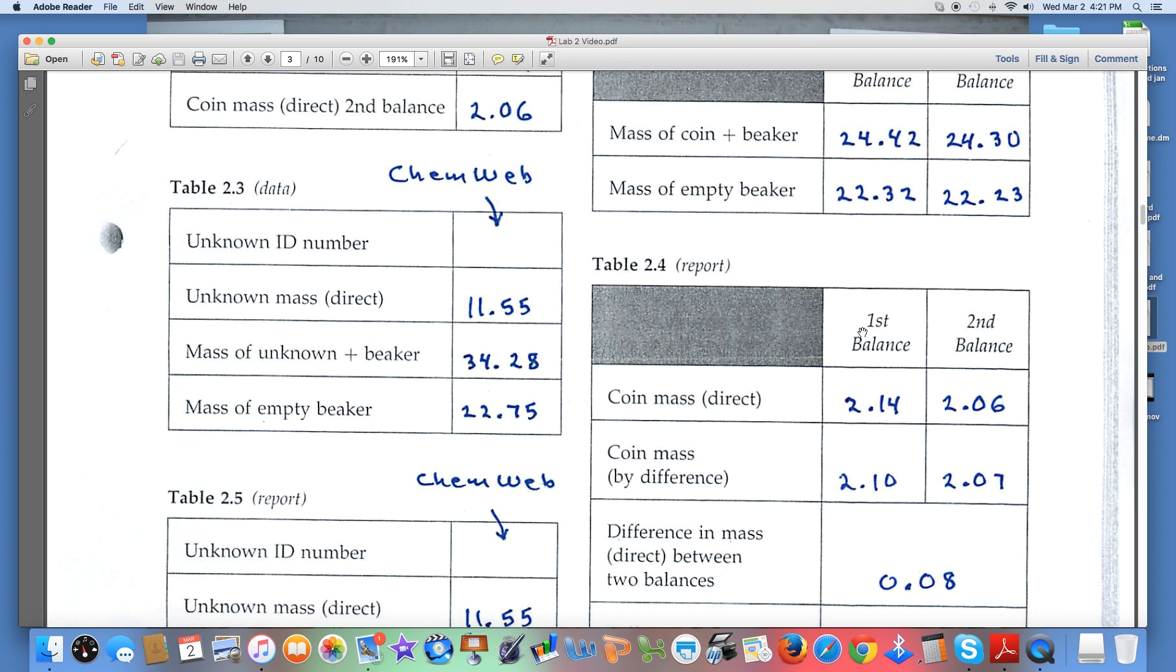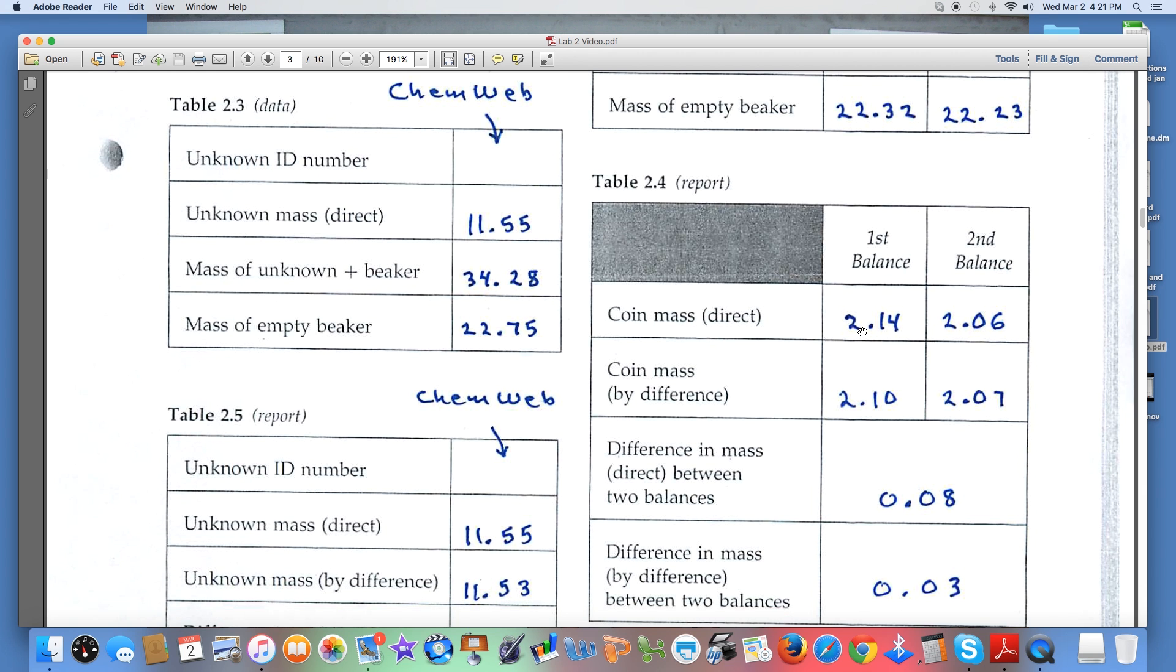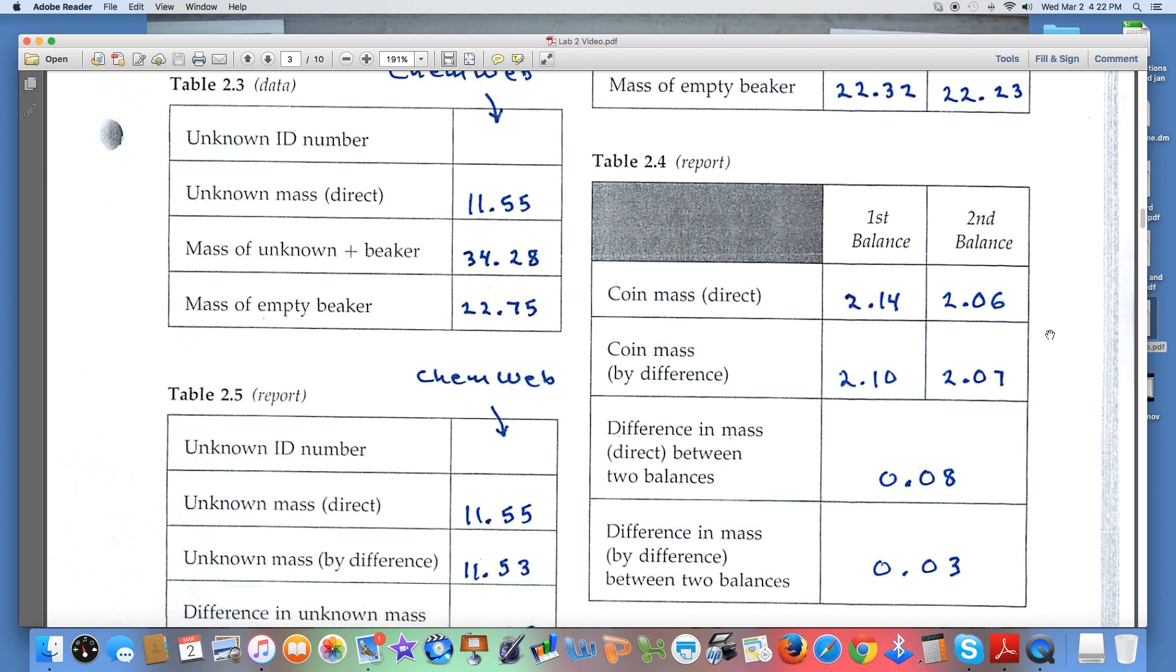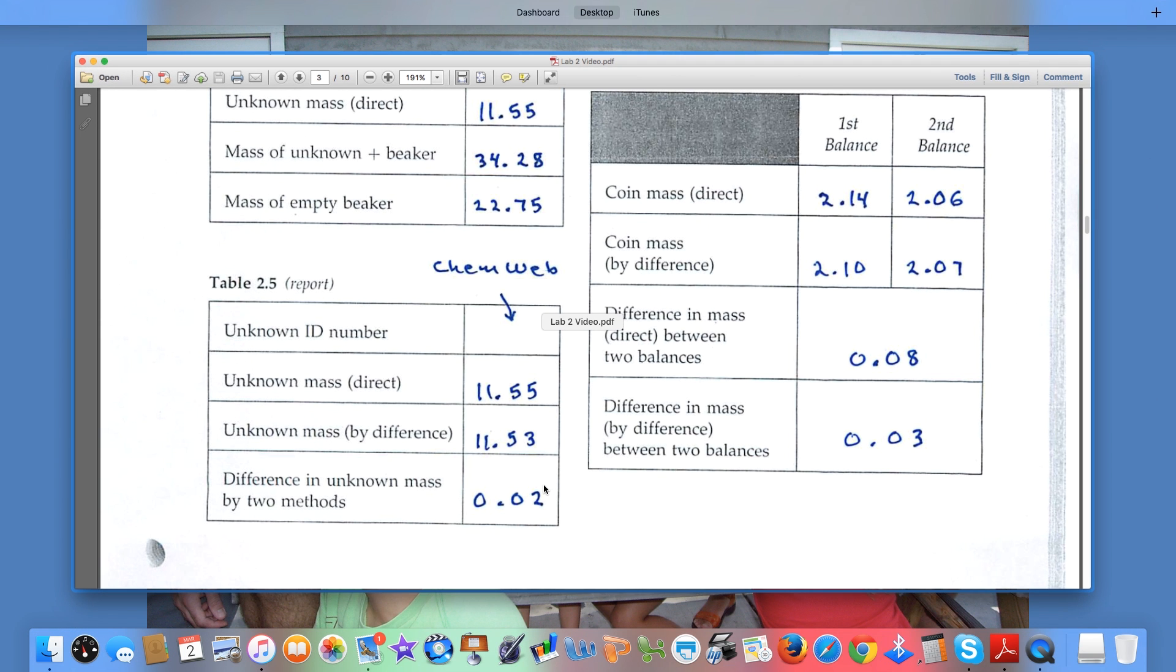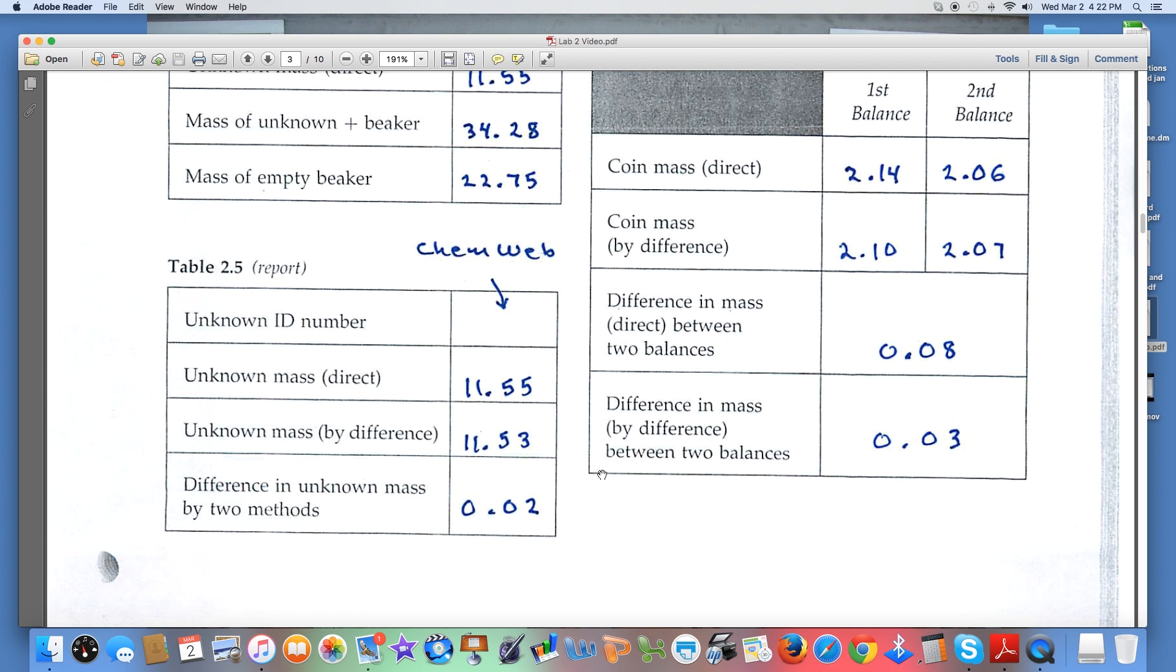Table 2.4 deals with the report. Now you're manipulating this data that you've got. I think it's straightforward. When you subtract numbers that are to the hundredth, following the rules for significant figures, the differences will be expressed to the hundredth, so make sure that you've got the correct number of decimal places. Table 2.5: here's the unknown number again, and every number to the hundredth, and the difference to the hundredth.